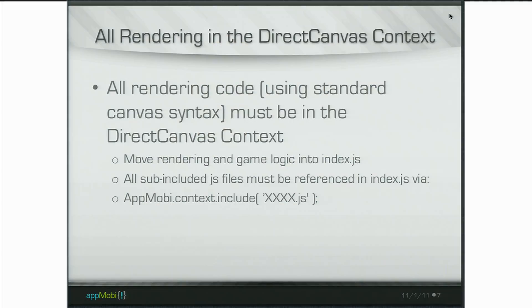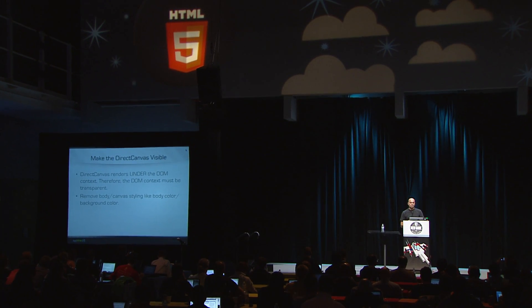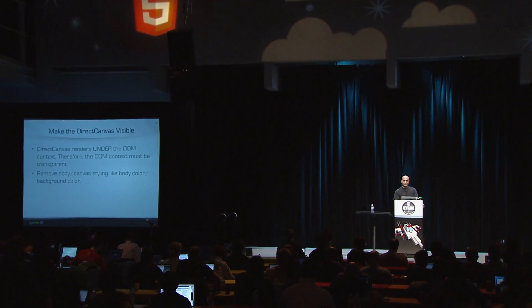To reiterate: we're moving all the rendering into the game logic layer. All sub-included JS files are done using an additional include syntax which we created called context.include. Because there are two layers going on at the same time — a user input layer, the DOM layer, and the direct canvas layer — you have to make sure that the canvas is visible. The body of the DOM layer can't have a background, can't have an opacity. It has to basically be transparent. You have to remove styling on the body that would prevent the game layer from being visible.